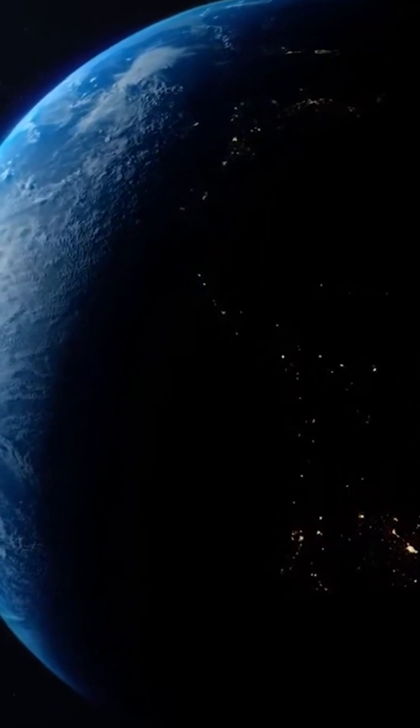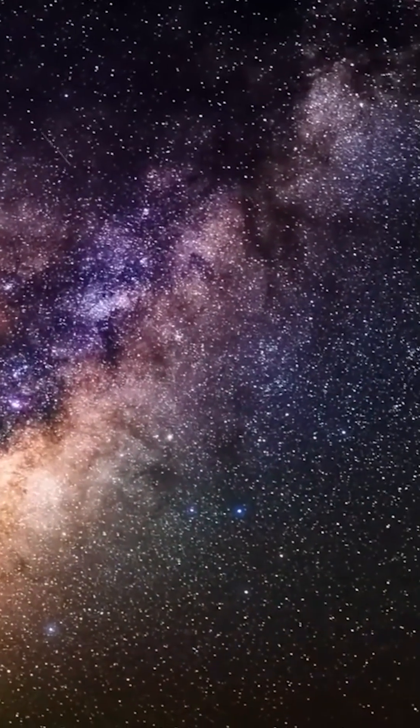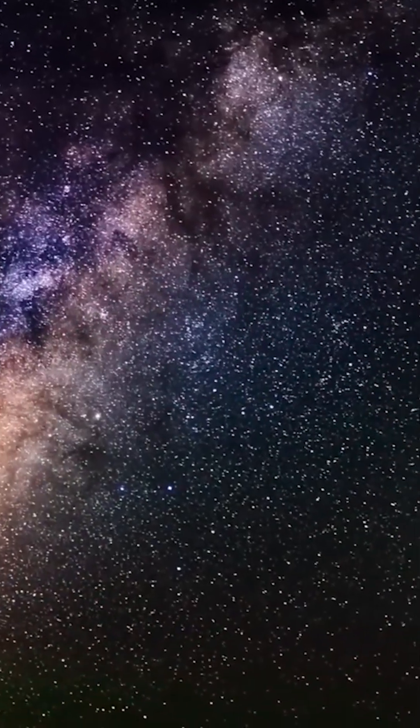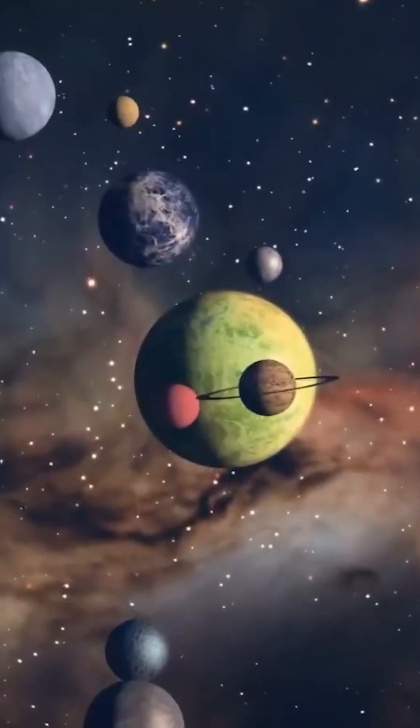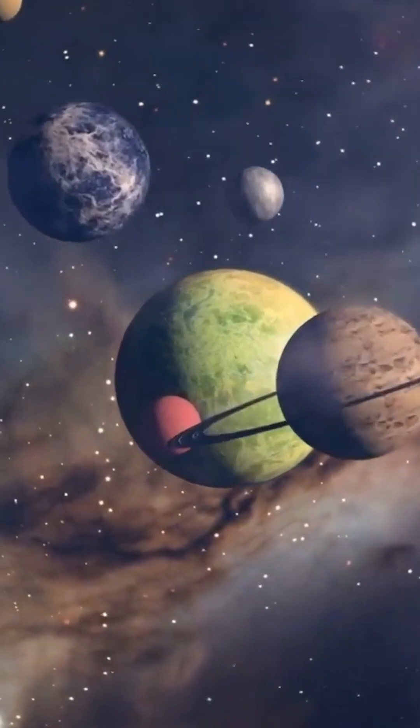Earth becomes a rogue planet, no longer bound to the sun. Within days, temperatures plummet, plants wither, oceans begin to freeze, cities are blanketed in darkness. The only light left comes from the stars, faint and cold. But the story doesn't end there.